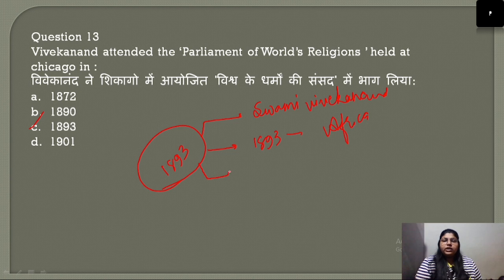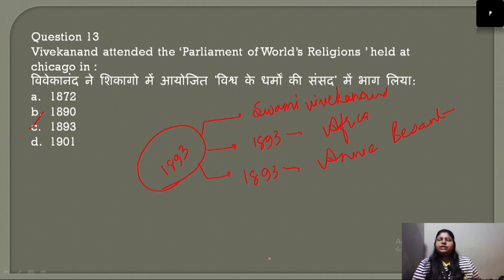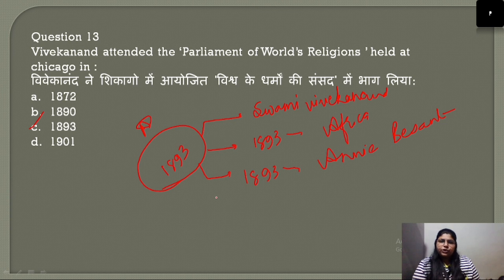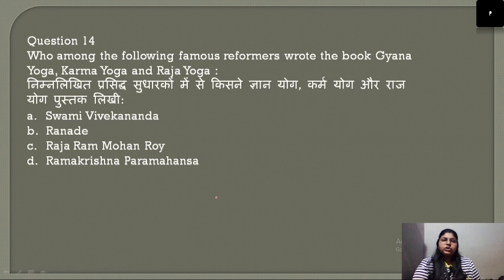Other important events of 1893 include: the Theosophical Society's activities, and Gandhi's arrival in Africa. So 1893 is important for three key events. Regarding Swami Vivekananda's attendance at the Parliament of World Religions in 1893, the correct answer is option C.